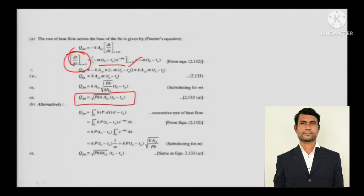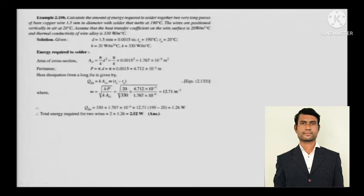When X is zero, temperature becomes maximum. You differentiate, put X = 0, rearrange the terms, and you can get the expression for Q. It is a straightforward derivation.